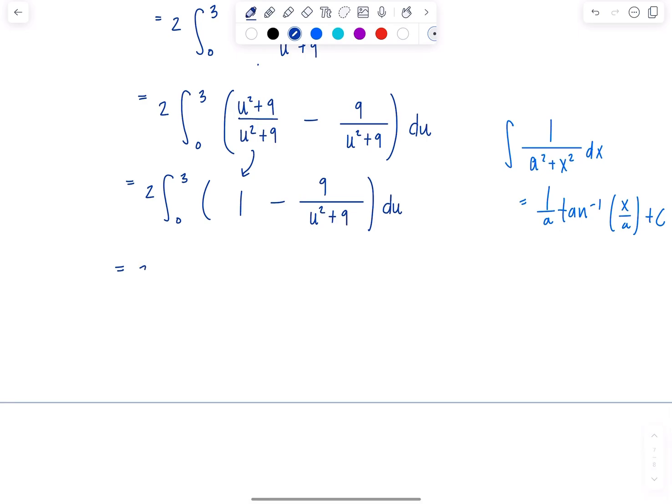So here we have 2. I'm ready to integrate. Are you? Let's do it, Professor V. Antiderivative of 1 is just going to be u minus. Now this 9 is just going to come along for the ride. And then here, pay attention, this 9 is my a squared. So a is 3. So this antiderivative is going to be 1 third tan inverse u over 3. And we evaluate all of this from 0 to 3.